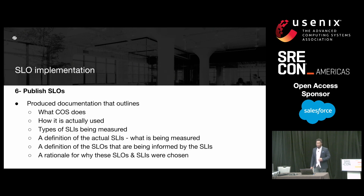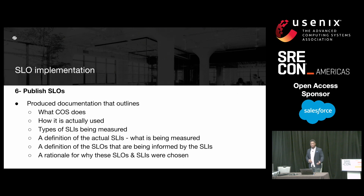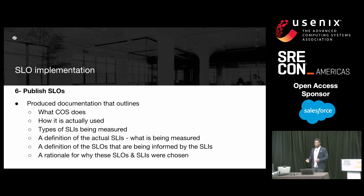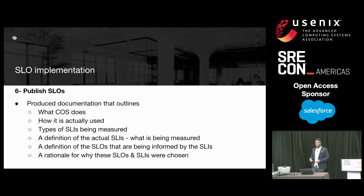Our last step, and probably the easiest one, was to publish these SLOs. This is where we produce documentation that outlines: what the service does and how it is used, the types of SLIs being measured, a definition of the actual SLIs, a definition of the SLOs being informed by the SLIs, plus a rationale for why these SLOs and SLIs were chosen. We've made this documentation available to our users and other engineering groups as a reference regarding the reliability guarantees of the service. And we review this documentation quarterly for any necessary SLO adjustments to ensure that these values are in line with reality.